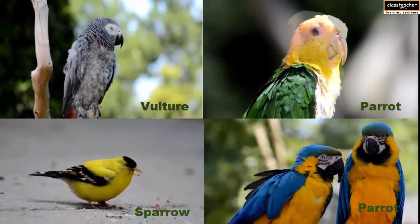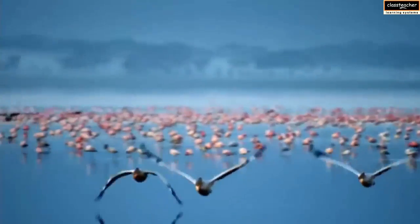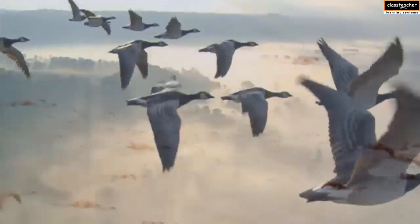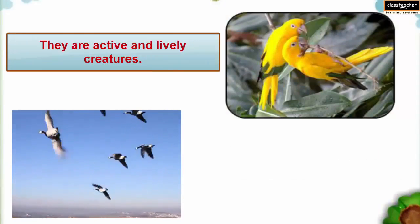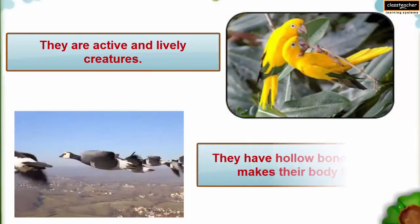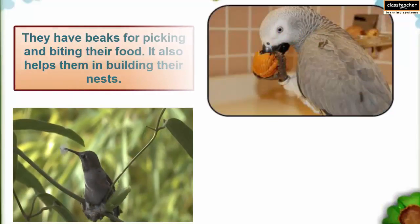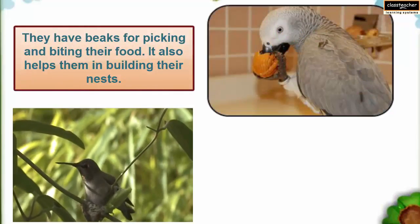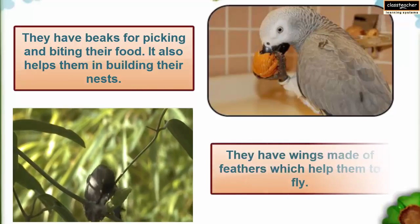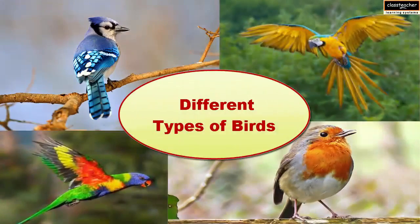You must have seen many birds having different sizes and colors. Let us have a look at some special features of birds. They are active and lively creatures. They have hollow bones which makes their body light. They have beaks for picking and biting their food, which also helps them in building their nests. They have wings made of feathers which help them to fly. In this video we will study about different types of birds.